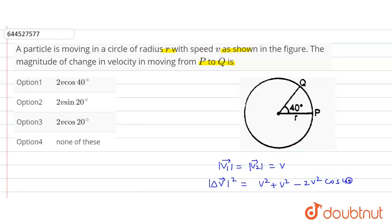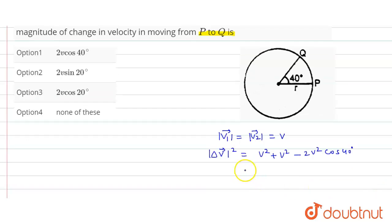This is equal to 2v squared common. Taking 2v squared common, this will be 1 minus... we can write this as 2 into sine squared 20 degrees.